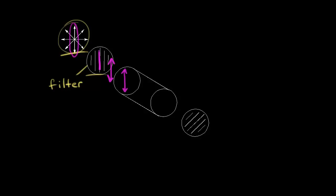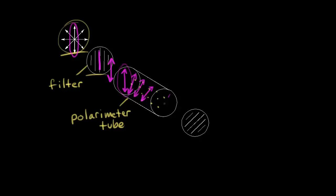This plane of polarized light comes to a tube — this is the tube of the polarimeter. In our tube we have a solution of an optically active compound dissolved in something. Our plane of polarized light rotates when it hits our compound. Imagine this plane, which starts off up and down, begins to rotate. The more molecules it hits, the more it rotates, and so by the time it leaves our tube, it's at a different angle from how it entered.